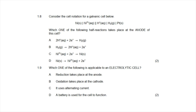Question 1.8: Consider the cell notation for a galvanic cell below. Which of the following half-reactions takes place at the anode of the cell? The anode of a galvanic cell is the one with greater reducing ability. From the table of standard reduction potentials, that is nickel, which undergoes oxidation — solid nickel breaks apart into nickel ions and two electrons. The correct answer to 1.8 is D.